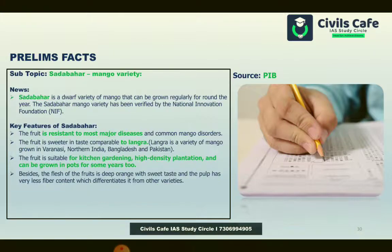A new mango variety called Sabadhar has come up — it is a dwarf variety that gives mangoes throughout the year and can be used as a kitchen tree in kitchen gardens and in high-density plantation. It is sweeter, less fibrous, and has been verified by the National Innovation Foundation.